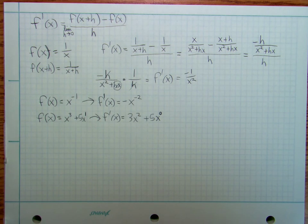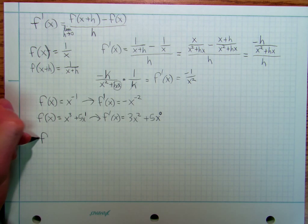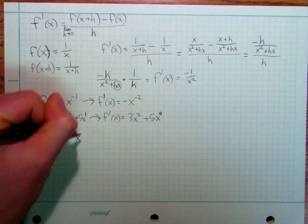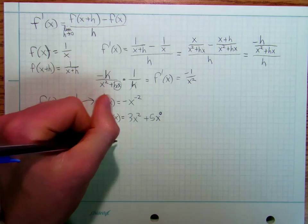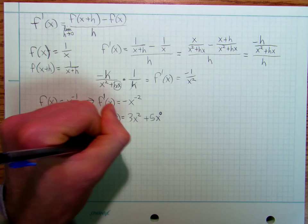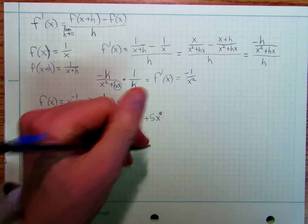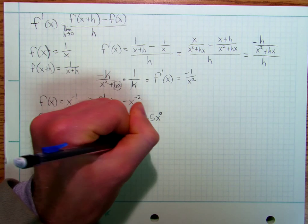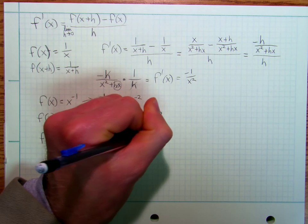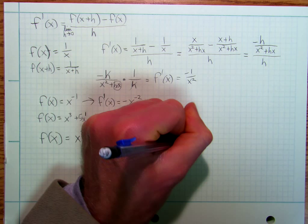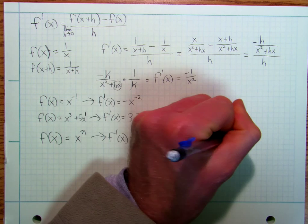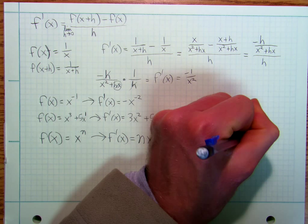I'm going to say that if f of x is equal to x to the n, then f prime of x is going to equal n times x to the n minus 1. And that's our power rule for derivatives.